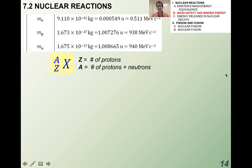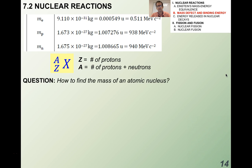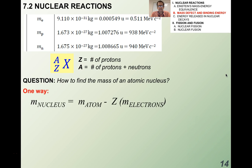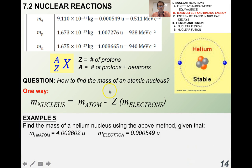Remember that on the periodic table, A is the number of protons and neutrons, and Z is the proton number. To find the mass of an atomic nucleus, one way is to take the entire mass of the atom and subtract the mass of the electrons times the number of electrons — assuming the atom is neutral, where the number of electrons equals the number of protons. Go ahead and find the mass of a helium nucleus using this method.